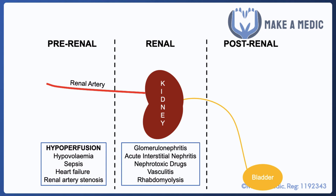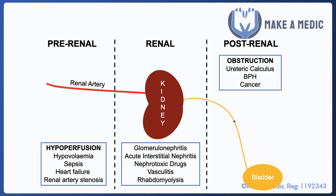Intrinsic renal causes can be divided based on the components of the kidneys that are affected. For example, the glomerulus in glomerulonephritis, the interstitium in acute interstitial nephritis, the blood vessels in vasculitis, and various others like nephrotoxic drugs and rhabdomyolysis as well.